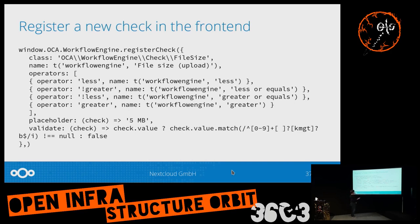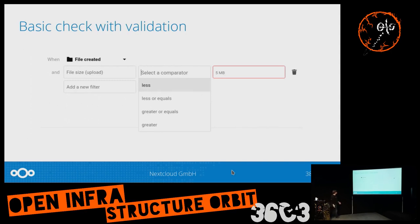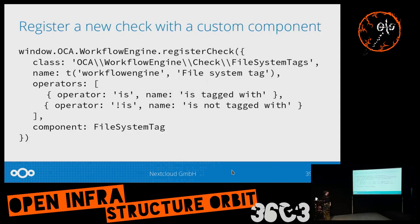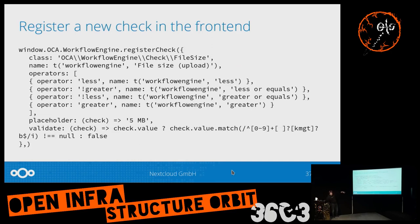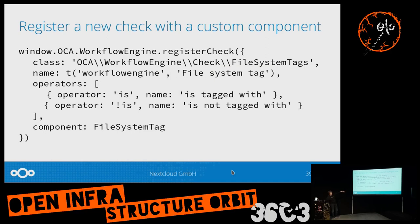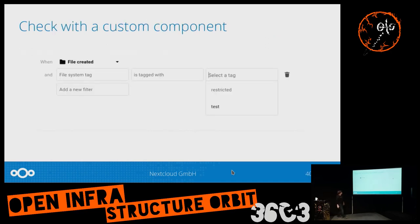The file system tag checker has a custom component for 'is' and 'is not' operators. The file size check doesn't have its own component, but the file system tag checker does — it implements a multi-select dropdown and loads the values itself. That's what makes it more special than the simple file size check.